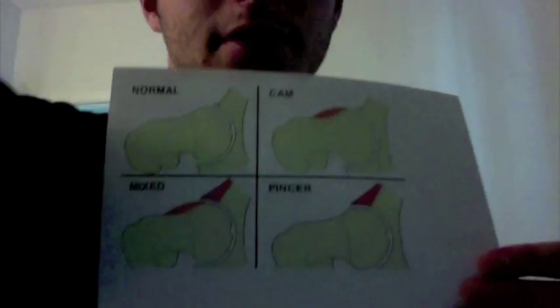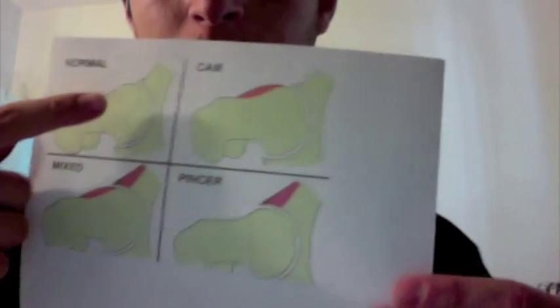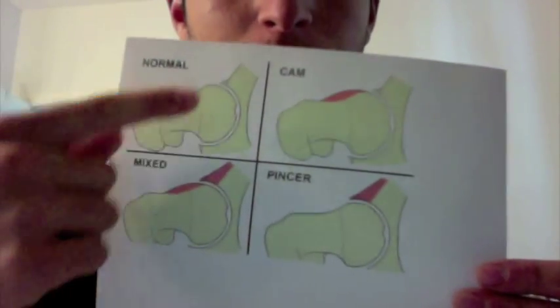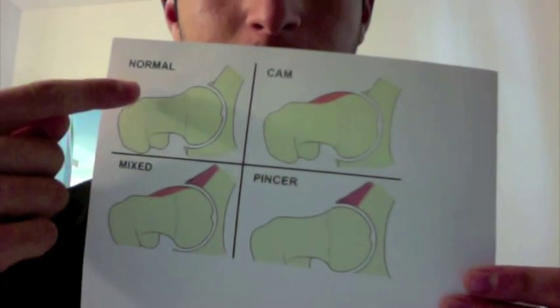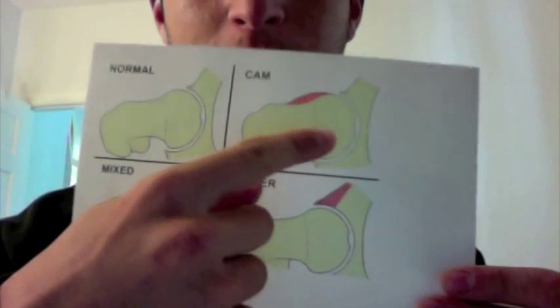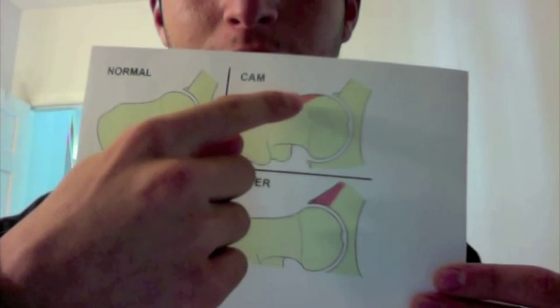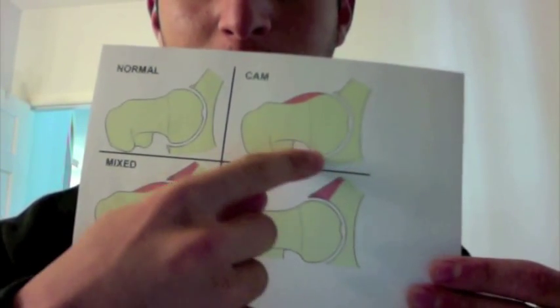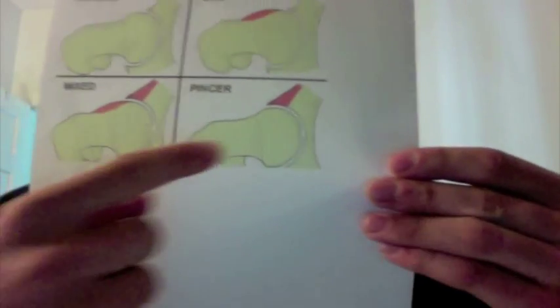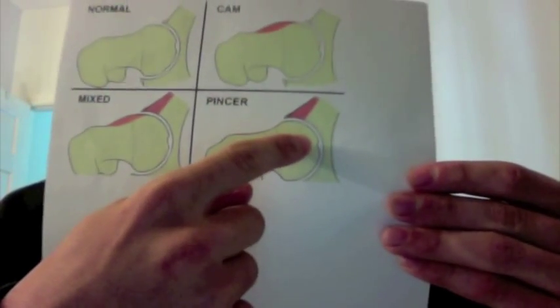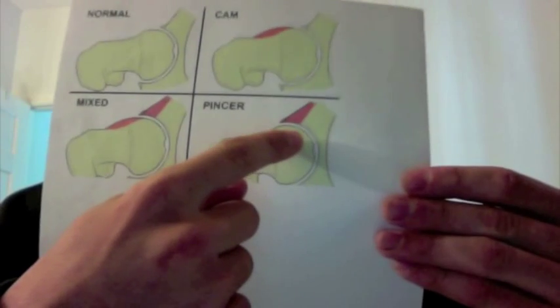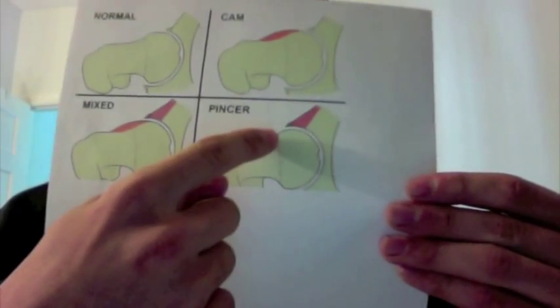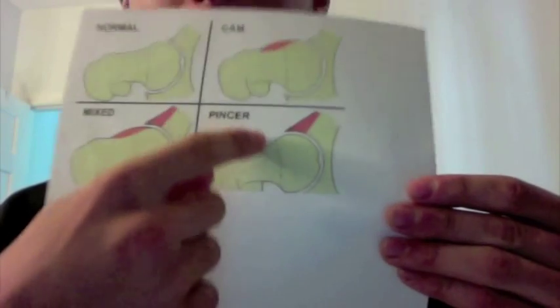Here's a picture of femoroacetabular impingement to help you visualize. Here's a normal femur where the head is spherical and the neck is concave, but with cam-type impingement, there's a bony abnormality where the head of the femur is bigger than it should be, so it doesn't fit into the acetabulum well. Here is a pincer-type femoroacetabular impingement where the acetabulum extends farther than it should, and it causes grinding on the femoral neck.